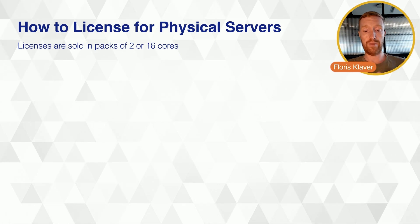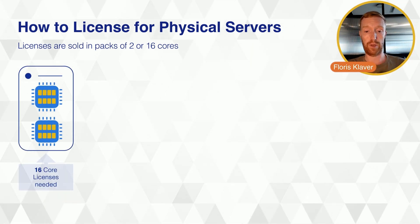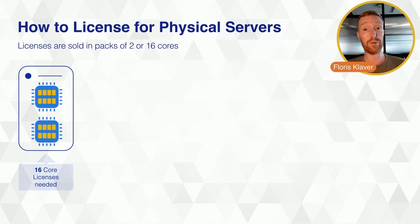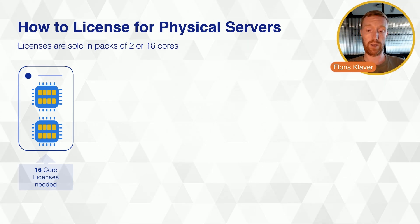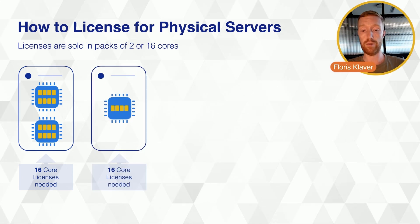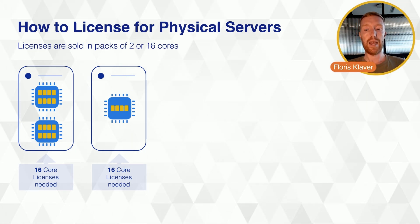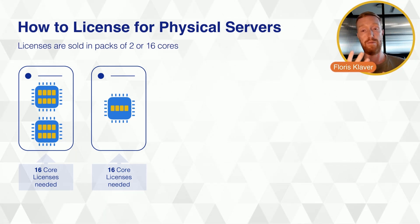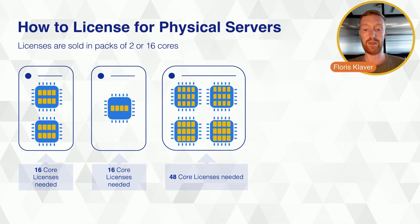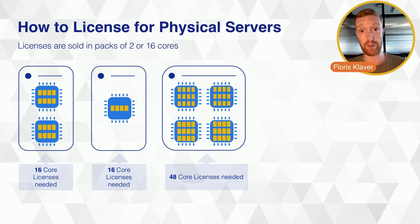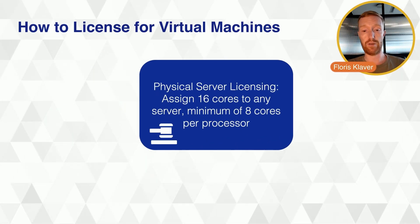We'll go through three examples on how to license cores per server. First, a server with two processors each having eight cores — you would require 16 core licenses. Second, an older server with one processor and only four cores — you would still be required to license a minimum of 16 cores. Third, a four-processor machine with 12 cores per processor — you would need to license 4 times 12, or 48 core licenses, to cover all cores correctly.